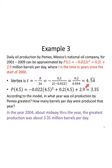Now if I put in this 4.5, I'm gonna round it to 4.5. If I evaluate the function at 4.5, I put 4.5 in for all my t values, I'll end up with 3.35. What does this mean? T is the year since the start of 2000. So this is four and a half years later. So in the year 2004, about midway through the year, the greatest production, because we're looking at the vertex, was about 3.35 million barrels per day.